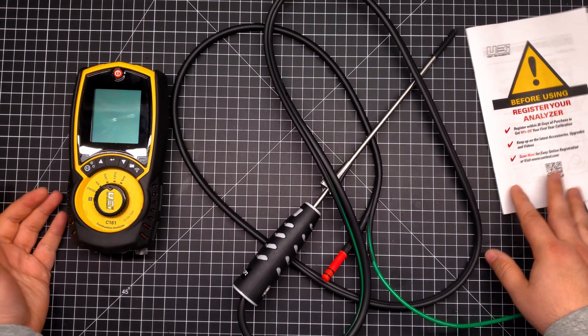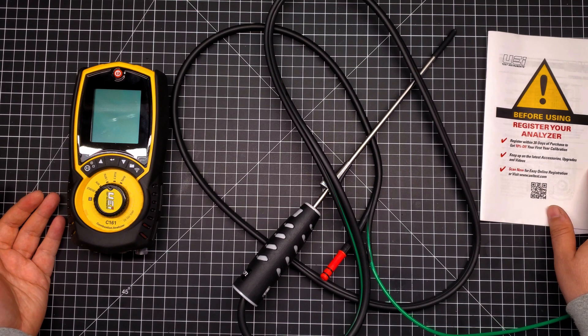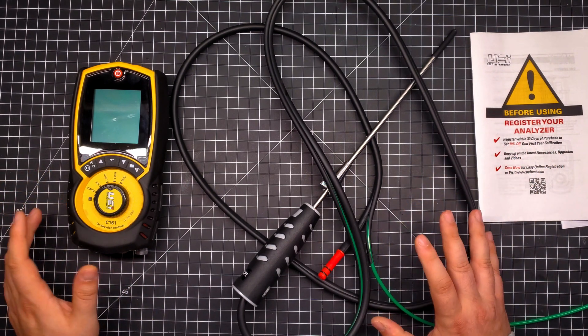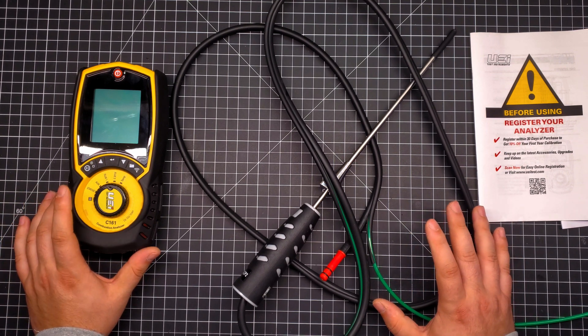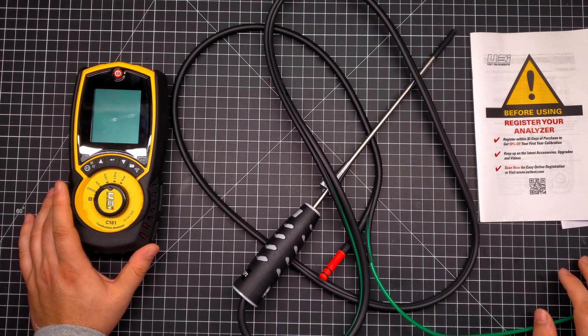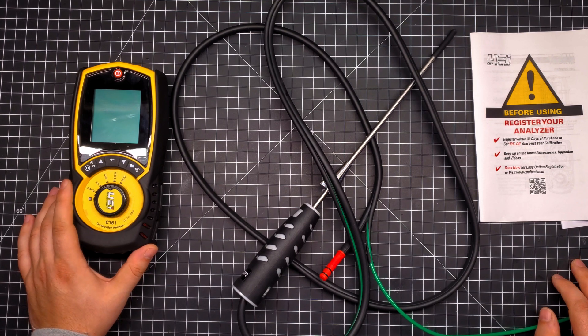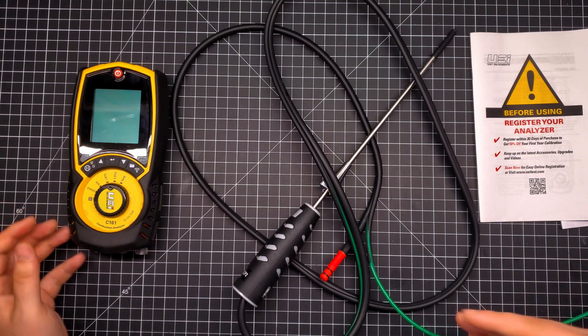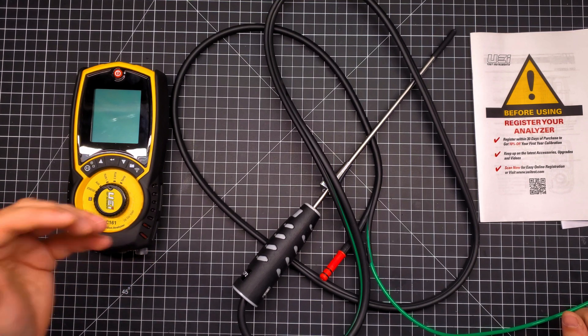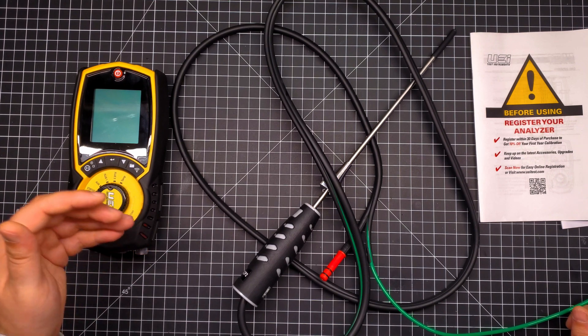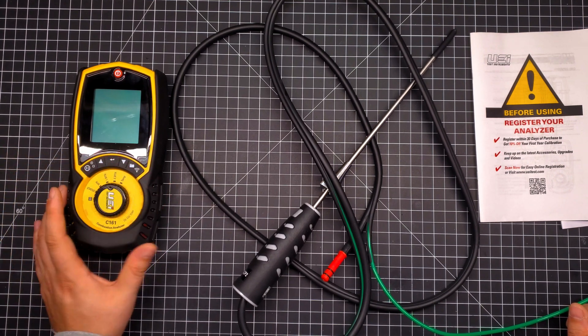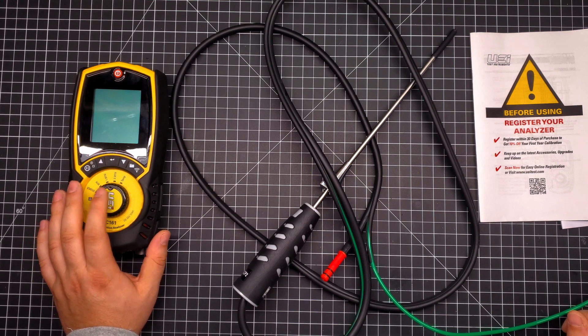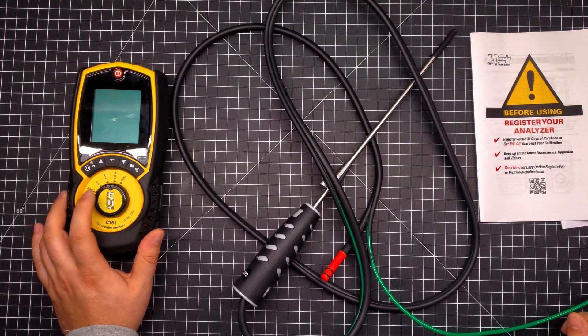The other good thing too about the C161 and the units in that product line is, as long as you have it recertified and recalibrated yearly by UEI, they extend your warranty up to a maximum of six years. Now the Kanes have the benefit of as long as you have the 258 and 458s or any of their combustion analyzers that have the CO2 sensor, they offer a 10-year warranty as long as you get it serviced yearly by Kane themselves.